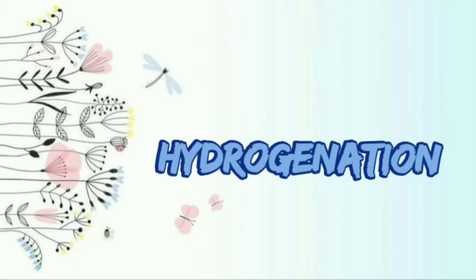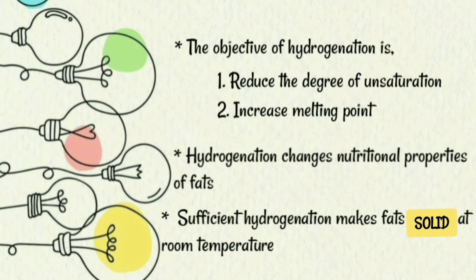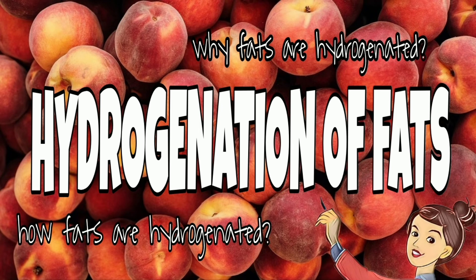The next property is hydrogenation. Hydrogenation is a chemical process that adds hydrogen to fat containing unsaturated fatty acids, making the fat more saturated. Hydrogenation reduces the number of unsaturated fatty acids and increases the number of saturated fatty acids. The objective of hydrogenation is to reduce the degree of unsaturation and to increase the melting point of fats. Hydrogenation also changes the nutritional properties of fats, and sufficient hydrogenation makes fats solid at room temperature.